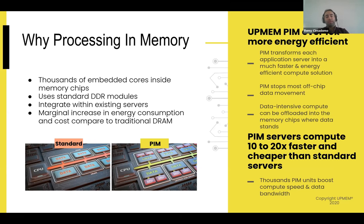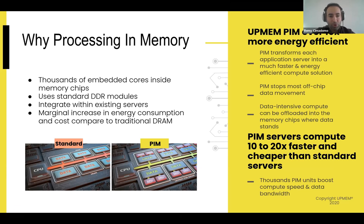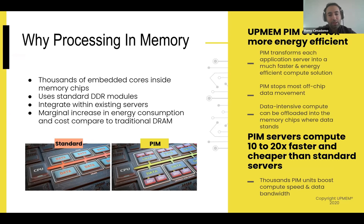PIM's primary benefit is that data is processed within the memory, eliminating constant data transfers between CPU and memory. This has significant impact on energy consumption, since those transfers are the source of energy cost in a server, and it alleviates memory bottlenecks while offloading the CPU.